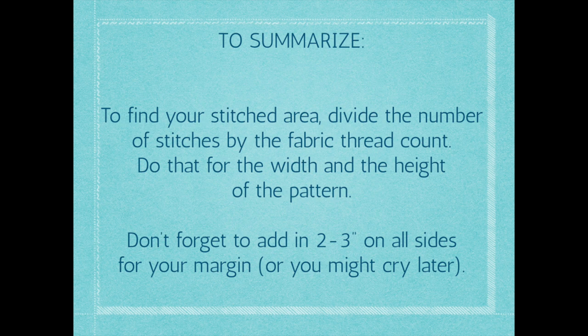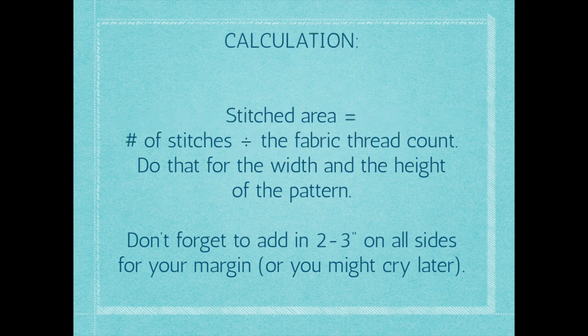It's sad — I don't want to see anybody cry, it's supposed to be a fun hobby. So here's a little slide you can take a screenshot of, or write this down. I'll put this in the accompanying blog post as well. The formula is: stitched area equals number of stitches divided by fabric thread count — do that for width and height. Then add in your 2-3 inches on all sides.